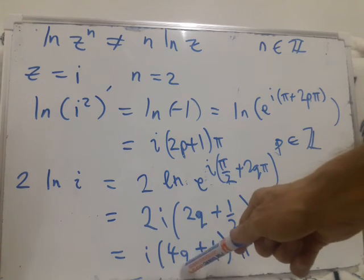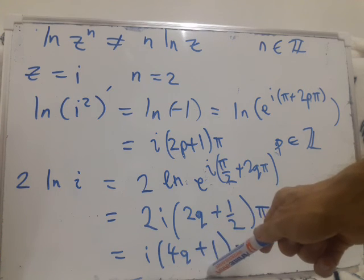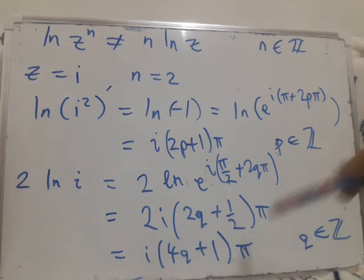Here, we miss some out, because when q is 0 we get 1, q is 1 we get 5. So we get 1, 5, 9 and so on.